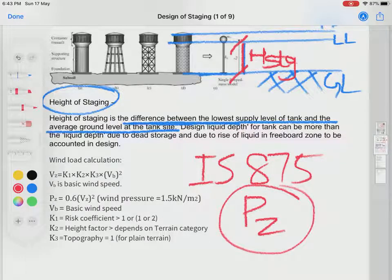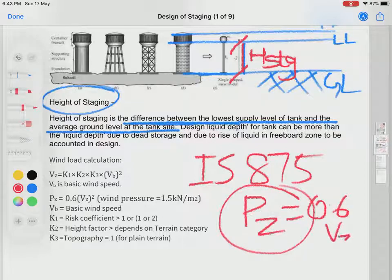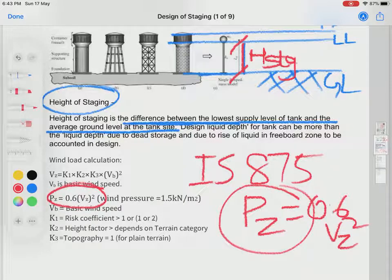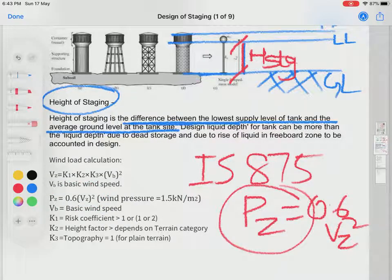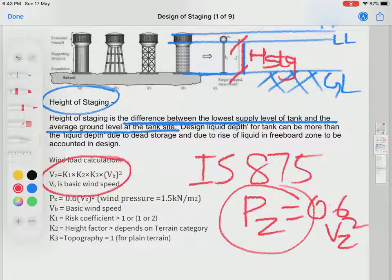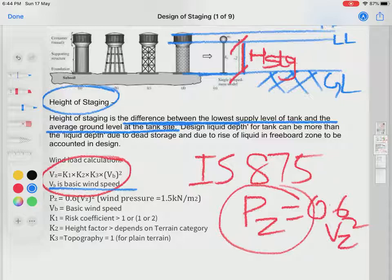I'm giving you a small summary on wind load calculation. Wind load calculation is completely discussed in detail in IS 875, part 3 or part 4. Wind load pressure Pz is calculated as Pz = 0.6 × Vz². This is the formula. Vz is design wind speed.